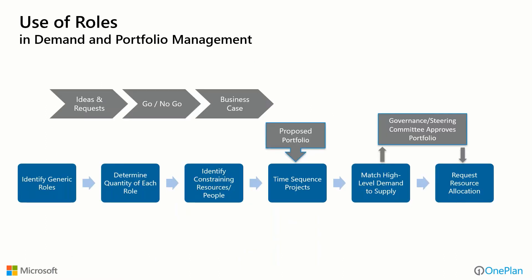All of this comes together — the demand management and portfolio management process really intersects and dovetails with resource management. You get ideas and requests, make go/no-go decisions, build business cases, and then you have a proposed portfolio. In parallel, you've identified generic roles for higher-level planning, determined the quantity of each role, identified constraining resources you don't want to overburden, and there's a time sequencing of when to do projects. Ultimately, you have to match that high-level demand of projects to the supply of resources you have, with some governance or steering committee making those determinations.